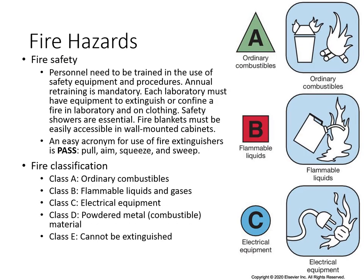There are fire hazards, and safety training will teach you how to use a fire extinguisher. To use one, remember the acronym PASS: Pull the safety pin, Aim at the base of the fire, Squeeze the trigger, and Sweep at the base of the fire to cover its width and length. Fire extinguishers are divided by class: A for normal combustibles like wood and paper, B for liquids and gas, C for electrical, D for powdered metal, and E for fires that cannot be extinguished.